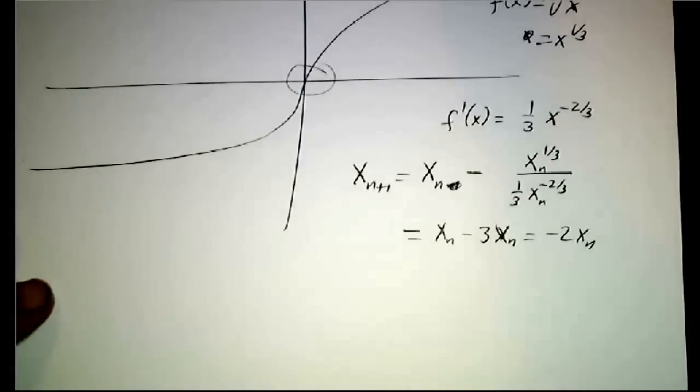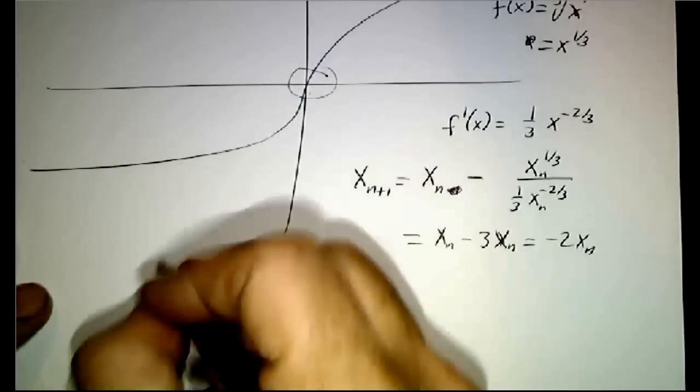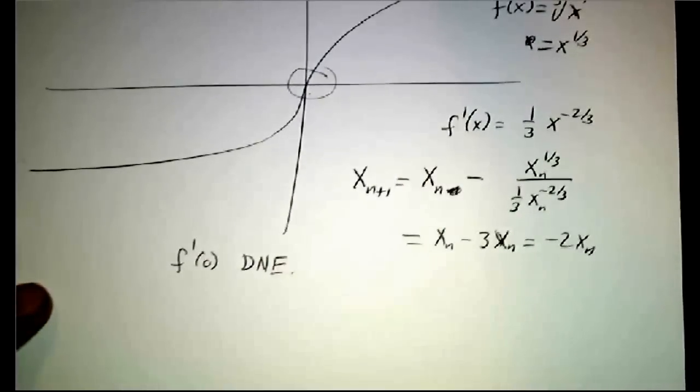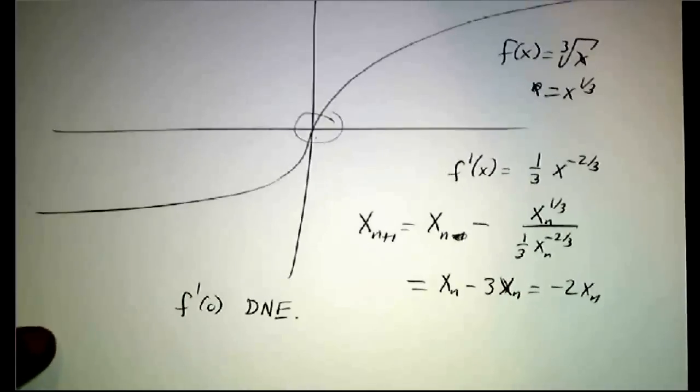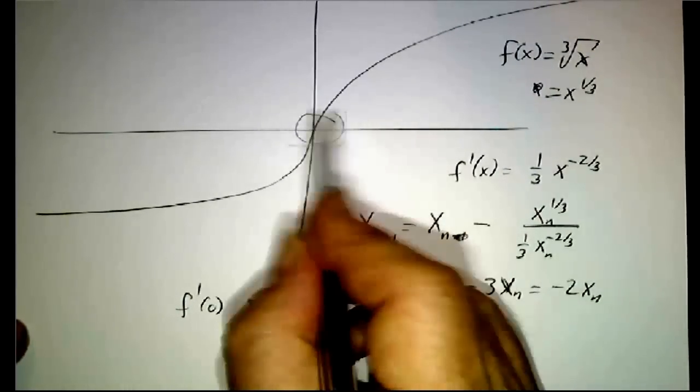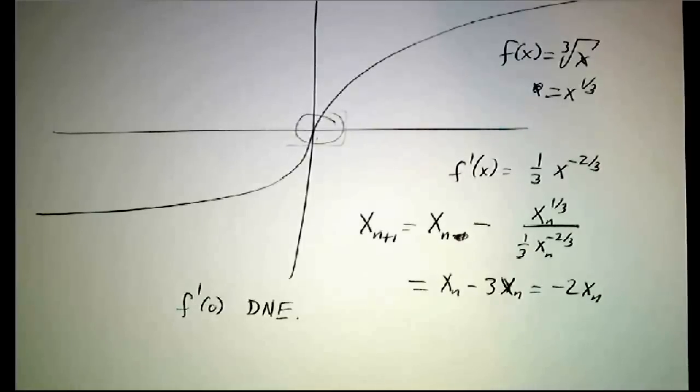The reason that this doesn't work is this isn't a smooth function. f' of zero doesn't exist. Newton's method is only good for functions that are actually smooth. This is not a smooth function. Newton's method doesn't work so well.